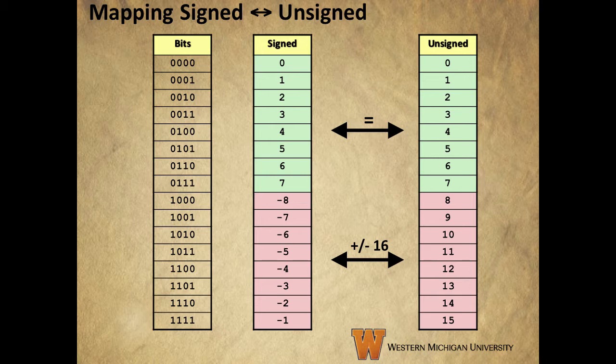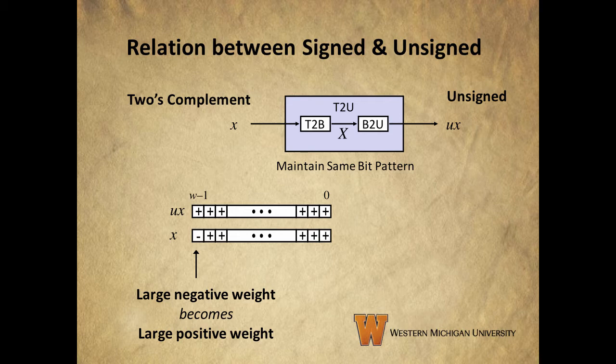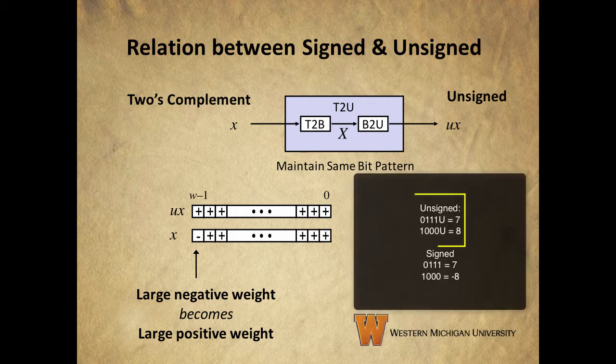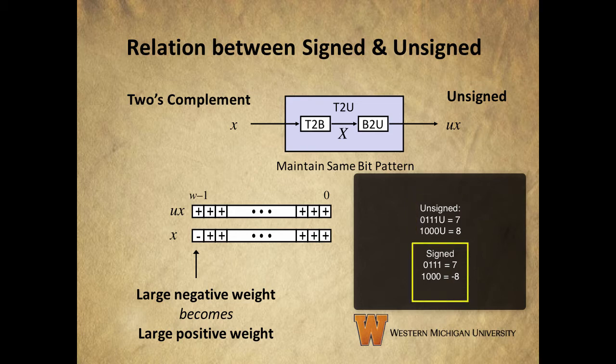So if we were using two bits, it would be plus or minus four, and if we were using eight bits, it would be plus or minus 256. Since the most significant bit is the sign bit, the largest possible positive weight in an unsigned integer becomes the largest possible negative weight in a signed integer. In unsigned, going from 0111 to 1000 just counts from 7 to 8, whereas going from the same bit patterns in two's complement takes us from positive 7 to negative 8.